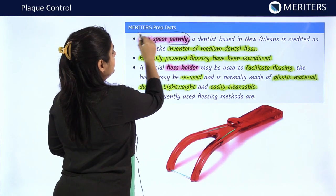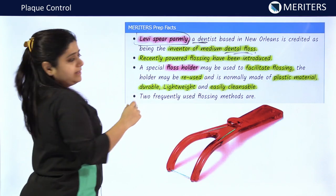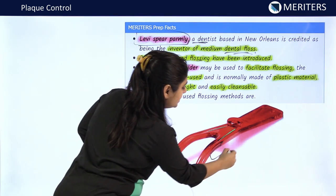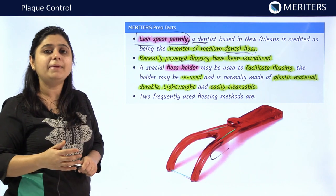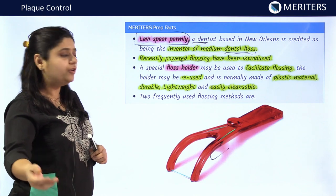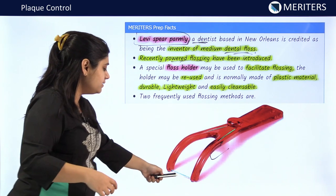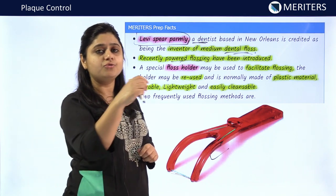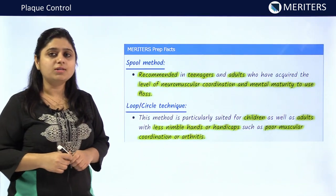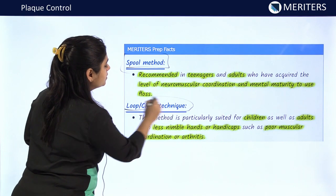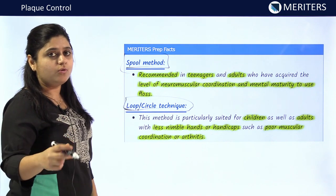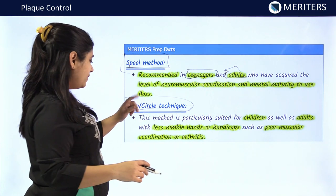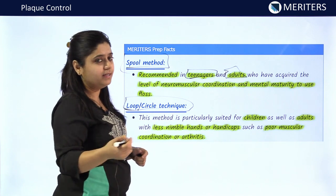Levi Speer Parmly is the dentist who invented dental floss. Recently powered flosses have come to market, and floss holders are also available. These floss holders are reusable, made of plastic, lightweight, and can be cleaned easily; they can be discarded after a week or two. Floss can be used by two methods: the spool method and the loop or circular method. Spool method is used in patients with good muscular control such as teenagers and adults, while the loop or circular method is used in patients who lack manual dexterity and in children.